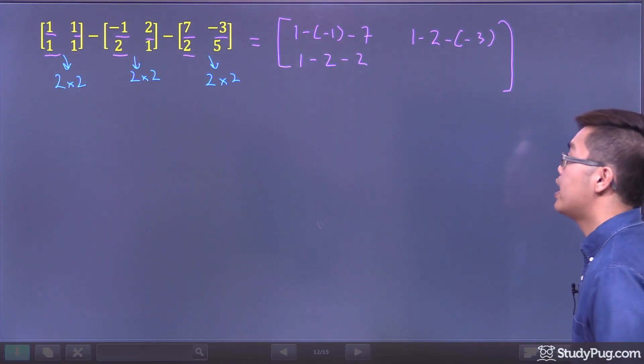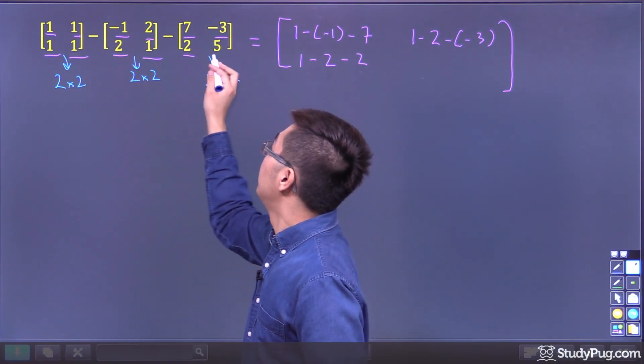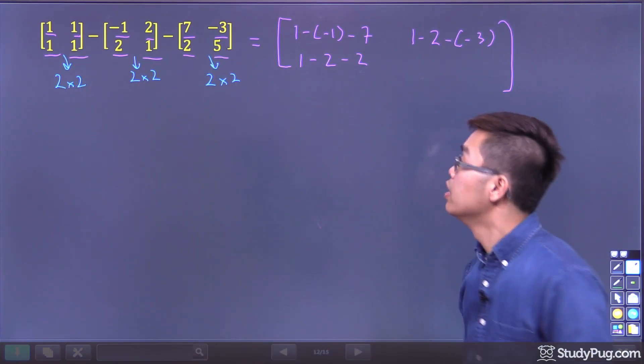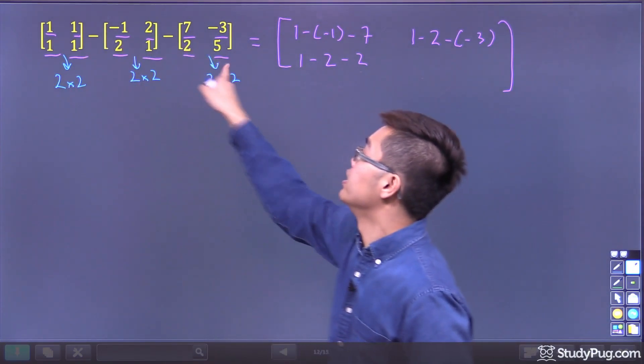And lastly, the last entry we have here: 1, 1, 5. So the corresponding entries are 1, 1, 5. And so we have 1 minus 1 minus 5.